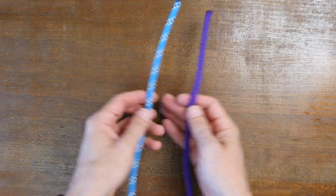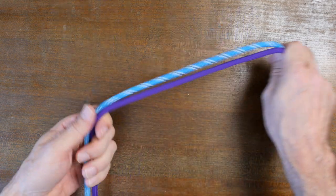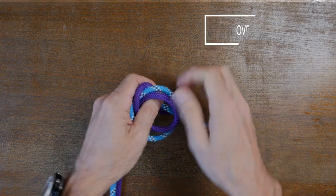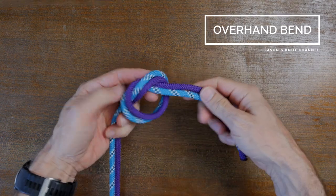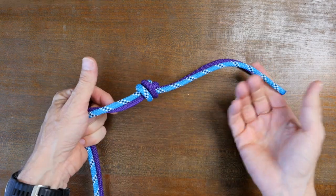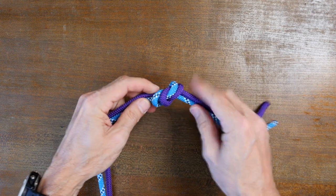In knotting terminology, a knot that's used to tie two ropes together is called a bend, and the simplest example of a bend knot is this overhand bend. Although this is a common way to tie two ropes together, it's not necessarily the best knot to use.